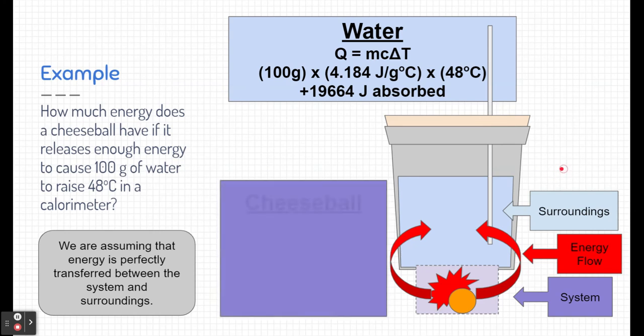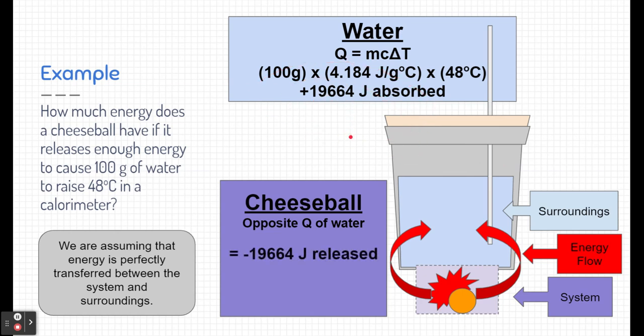Now, let's focus on our system, specifically the cheese ball. Remember, the cheese ball is just opposite of the enthalpy change of the water. All of the energy the water absorbed was the energy that the cheese ball released. So we could just change the sign of our enthalpy change. This time, it's negative 19,664 joules, which were released by the cheese ball. That's the answer we're looking for.